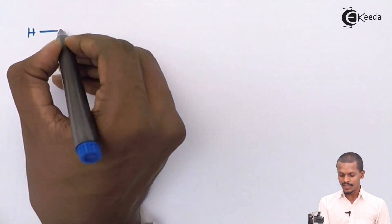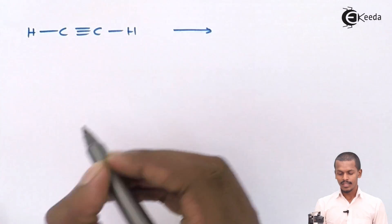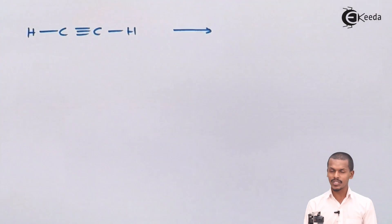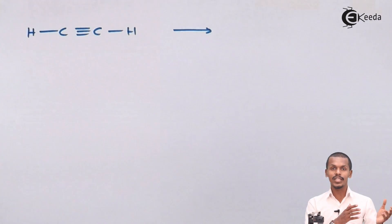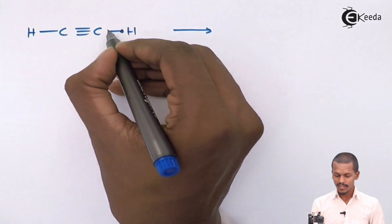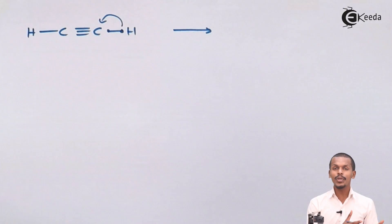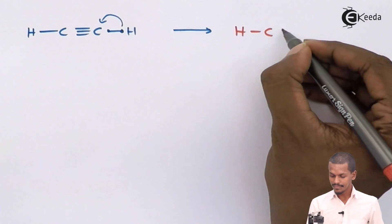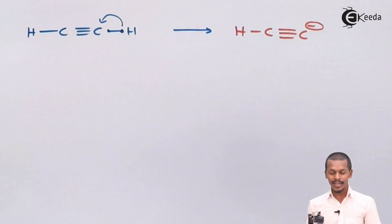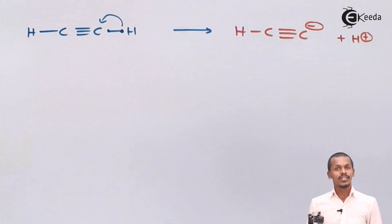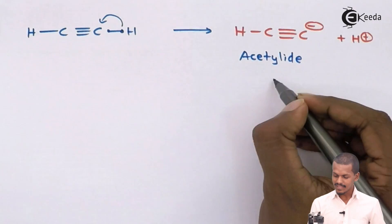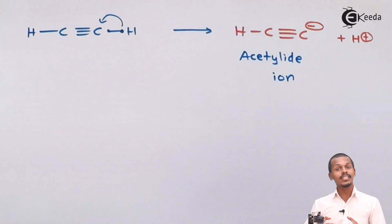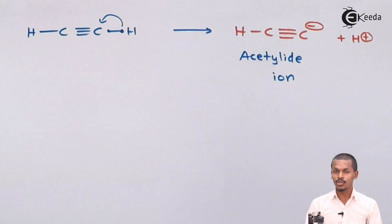Ethyne has a molecular structure we can write in this form. Suppose heterolytic fission takes place — because the carbon is showing SP hybridization, it will be more electronegative and will acquire the electrons of hydrogen towards itself. This heterolytic fission results in the formation of a negatively charged carbon atom and the proton is released as H+. This ion is basically known as the acetylide ion.